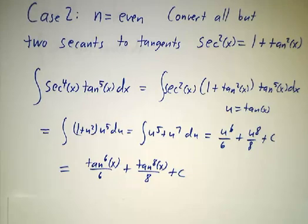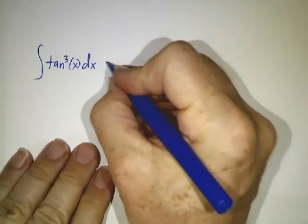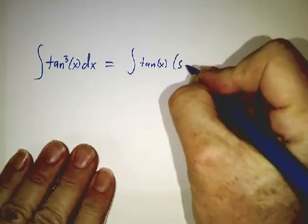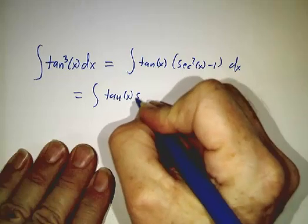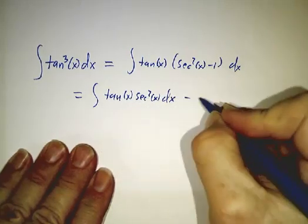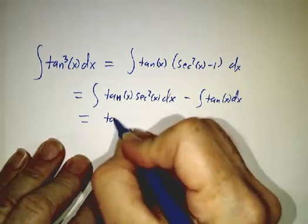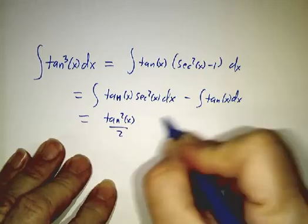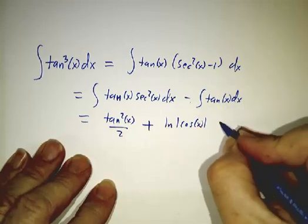This is philosophically the same idea as when dealing with odd powers of cosine: convert all but one cosine to sines; here, convert all but two secants to tangents. The special case is when n is zero — you must convert a couple of tangents back to secants. Write tangent squared as secant squared minus one, giving the integral of tangent of x times secant squared of x dx minus the integral of tangent of x dx. The first gives tangent squared of x over two, and the second gives the natural log of the cosine of x, minus that integral plus a constant.